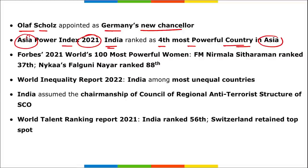Asia Power Index 2021: India ranked as the fourth most powerful country in Asia. Forbes list 2021 of the world's 100 most powerful women: Finance Minister Nirmala Sitharaman ranked 37th globally and was ranked as the most powerful woman in India. Falguni Nair, founder of Nykaa, ranked 88th.